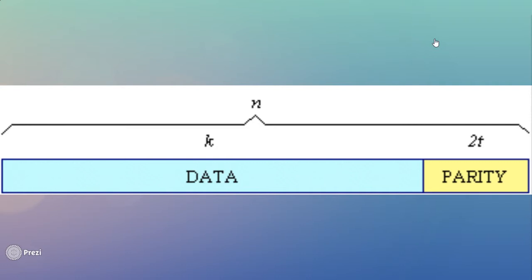This is the typical codeword of the Reed-Solomon code. It is referred to as a systematic code as the data on the left is left unchanged. The parity bits in this case are appended. The total codeword is denoted by n and it is the sum of the k bits and the 2t parity bits.